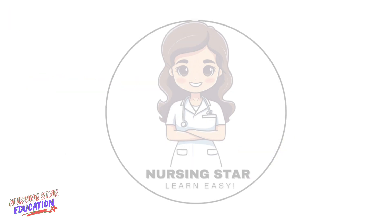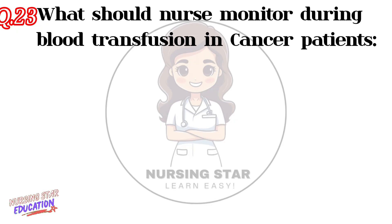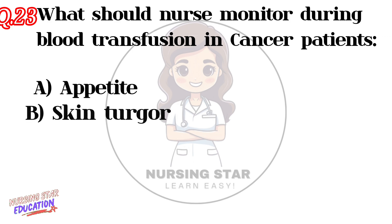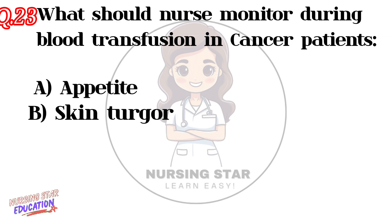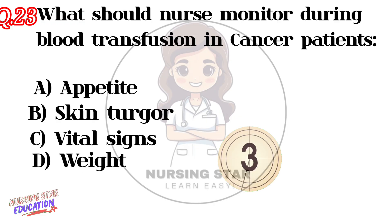Question number twenty-three: What should a nurse monitor during blood transfusion in cancer patients? Option A: Appetite. Option B: Skin turgor. Option C: Vital signs. Option D: Weight. Correct answer: C — Vital signs.